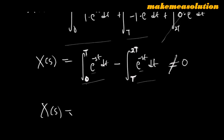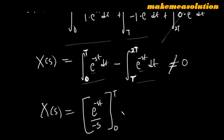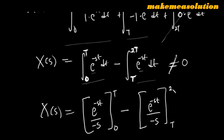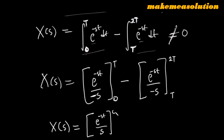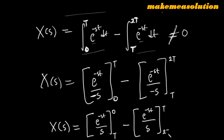So X(s) gives us exponential minus st over minus s, evaluated from zero to T, then minus exponential minus st over minus s evaluated from T to 2T. Now applying the skill from the last class — using the negative sign to reverse the direction of the definite integral — this becomes exponential minus st over s from zero to T, and exponential minus st over s from T to 2T.